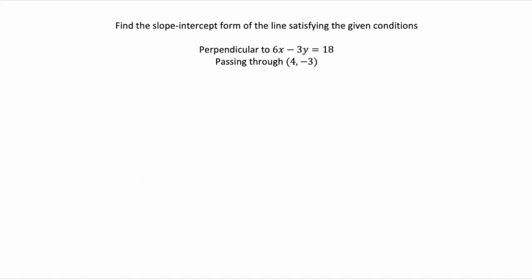Hey everyone, Professor Baldwin here. Today we're going to look at finding the slope intercept form of a line that satisfies some given conditions. So here we're looking for a line that's perpendicular to this given line, and it also needs to pass through this point.